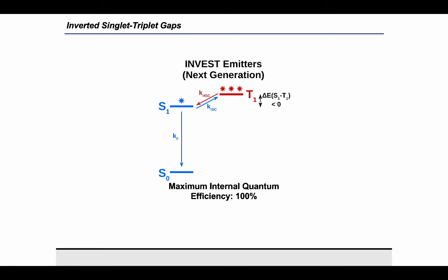This motivated us to look into an entirely new class of emitters, that is, INVEST emitters. INVEST stands for Inverted Singlet-Triplet Gaps and it indicates that in these molecules, the first excited singlet state is lower in energy than the corresponding first excited triplet. Consequently, the conversion of triplet to singlet excitons is energetically downhill, which minimizes the triplet population over time and should increase the device lifetime.